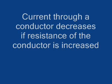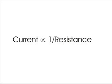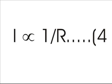Let's see this from a slightly different point of view. We know that current through a conductor decreases if the resistance of the conductor is increased for the same applied voltage V. This relation is linear according to Ohm's law. That means current through the conductor is inversely proportional to its resistance. That is, I is proportional to 1/R, where R is the resistance of the conductor. Say this is equation 4.